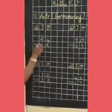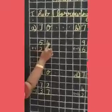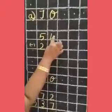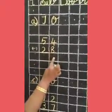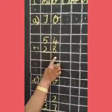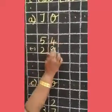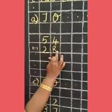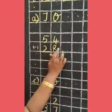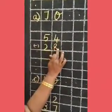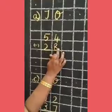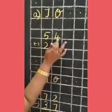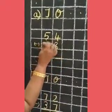First one: 54 minus 28. We have to subtract these two numbers. First we will subtract the ones place. 4 minus 8 — 4 is smaller than 8, so what we have to do? We have to borrow from the tens place.